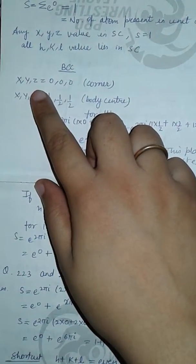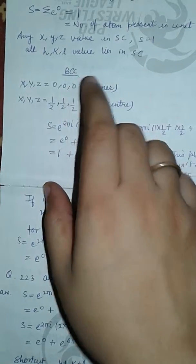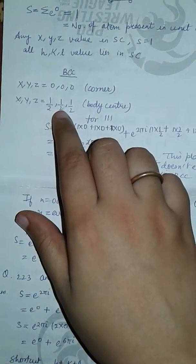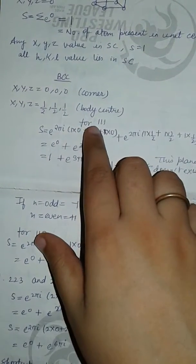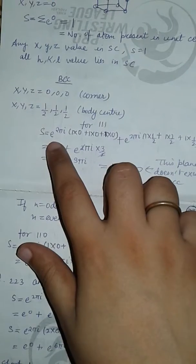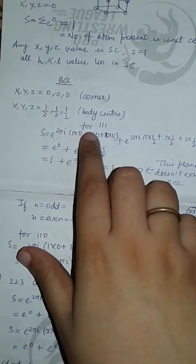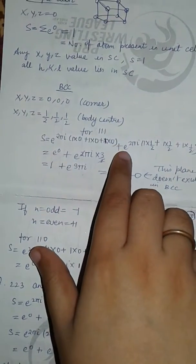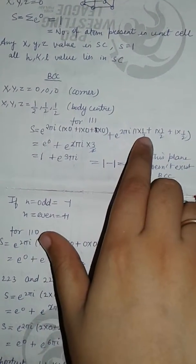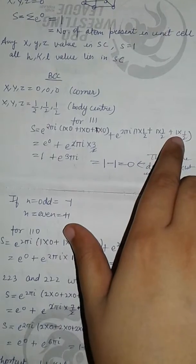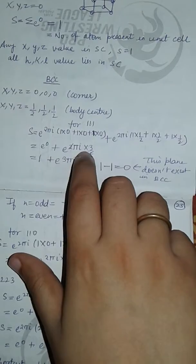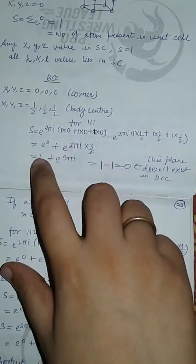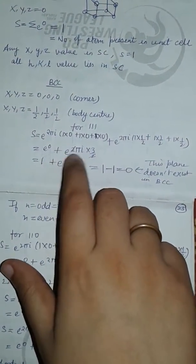For BCC structure, x y z equals 0 0 0 for the corner atom, and x y z equals 1/2, 1/2, 1/2 for the body-centered atom. For the plane (1,1,1), S equals e to the power 2 pi i (1·0 + 1·0 + 1·0) plus e to the power 2 pi i (1·1/2 + 1·1/2 + 1·1/2). The first term gives e to the power 0, which is 1, and the second term gives e to the power 3 pi i.